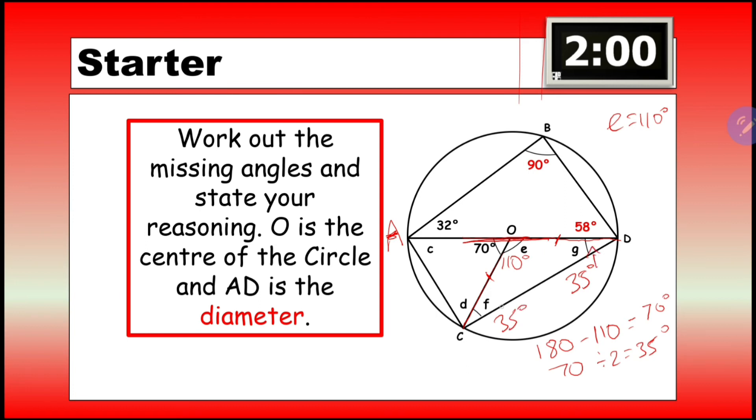So that's 35, and that's 35. Now, if F is 35, and F and D are going to make 90 degrees, then it's literally 90 minus 35, which equals 55 degrees. So D is 55 degrees.